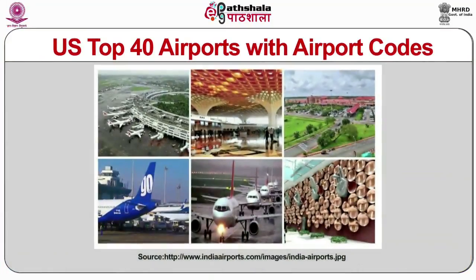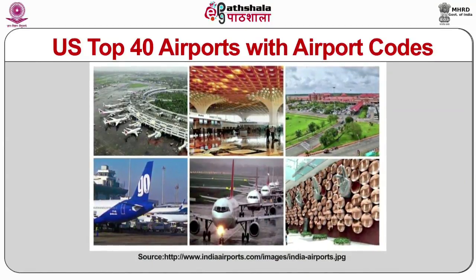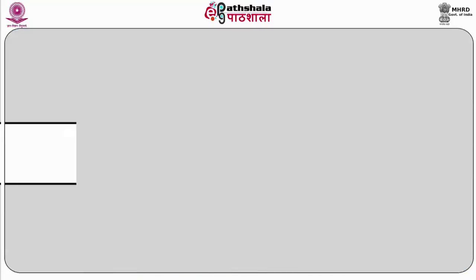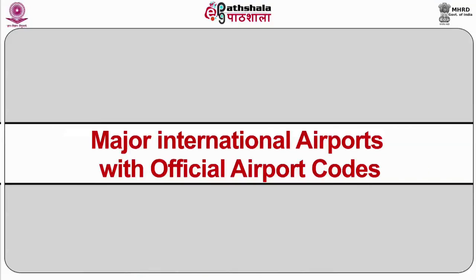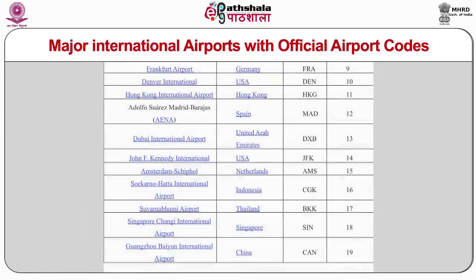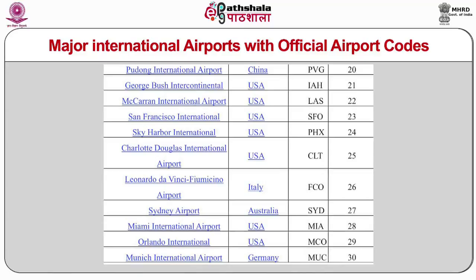From this tabular representation, you will find out about the top 40 international airports of the world along with their ITA codes and the cities where these airports are located. Let us now discuss major international airports with official airport codes. In this table, you will find the name of the airport, followed by the country in which that airport is located, followed by its three-digit ITA code assigned by the International Air Transport Association, and the rank of the airport in terms of world statistics.